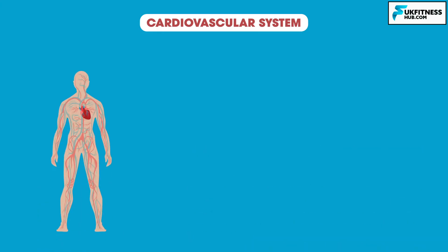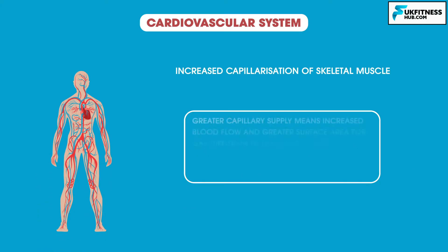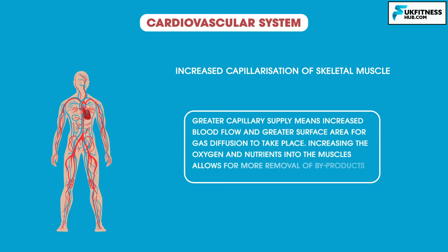Aerobic training leads to an increased capillarization of skeletal muscle. Greater capillary supply means increased blood flow and a greater surface area for gas diffusion to take place, increasing the oxygen and nutrients into muscles and allowing for more removal of byproducts.